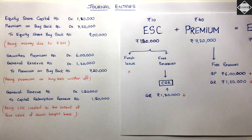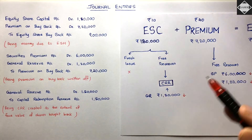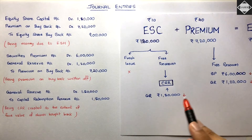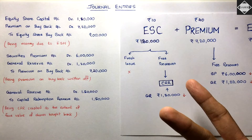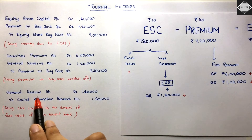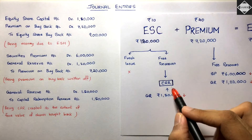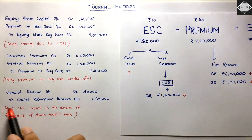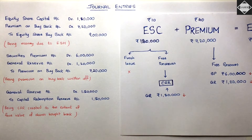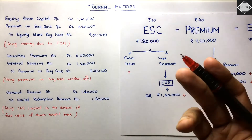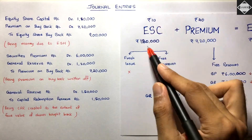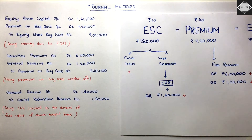Journal Entry 3 - Creation of CRR: Debit General Reserve Account ₹1,80,000; Credit Capital Redemption Reserve Account ₹1,80,000. Being CRR created to the extent of the face value of shares bought back (18,000 shares × ₹10 = ₹1,80,000). Only face value needs to be replaced by CRR or fresh issue.